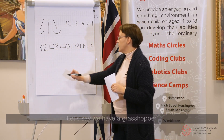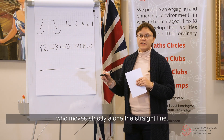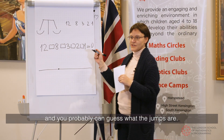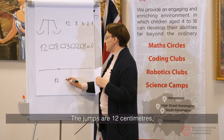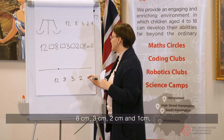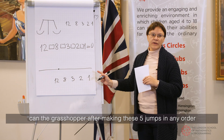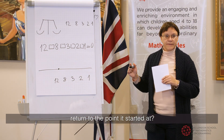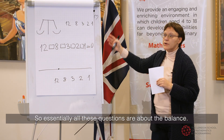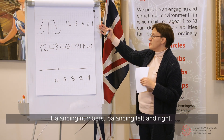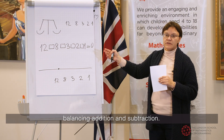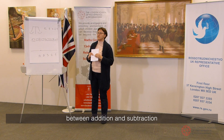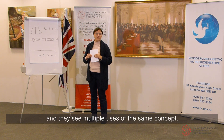Or we can present it in a different way: we have a grasshopper who moves strictly along a straight line. It starts here and has five jumps to do — jumps of 12 centimeters, 8 centimeters, 3 centimeters, 2 centimeters, and 1 centimeter. The question is: can the grasshopper, after making these five jumps in any order, return to the point it started? Essentially, all these questions are about balance — balancing numbers, balancing left and right, balancing addition and subtraction. By seeing this sequence, children learn better about the relationship between addition and subtraction, and they see multiple uses of the same concept.